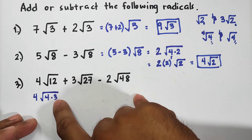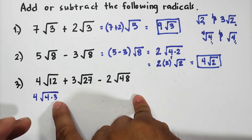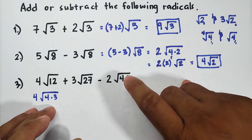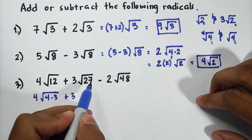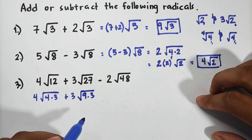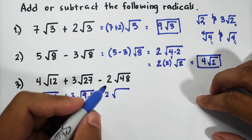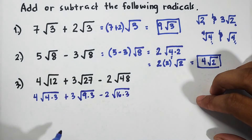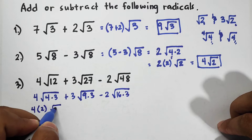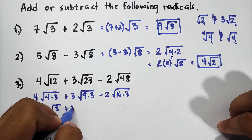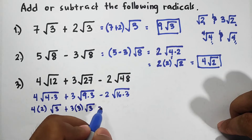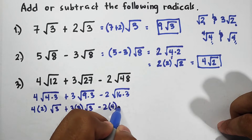The clue here is that 3 is a common factor inside all three radicals. For 27, we factor it as 9 × 3 (9 is a perfect square). For 48, we factor it as 16 × 3 (16 is a perfect square). So now we have: 4×√(4×3) + 3×√(9×3) − 2×√(16×3). Extracting: √4 = 2, √9 = 3, √16 = 4.